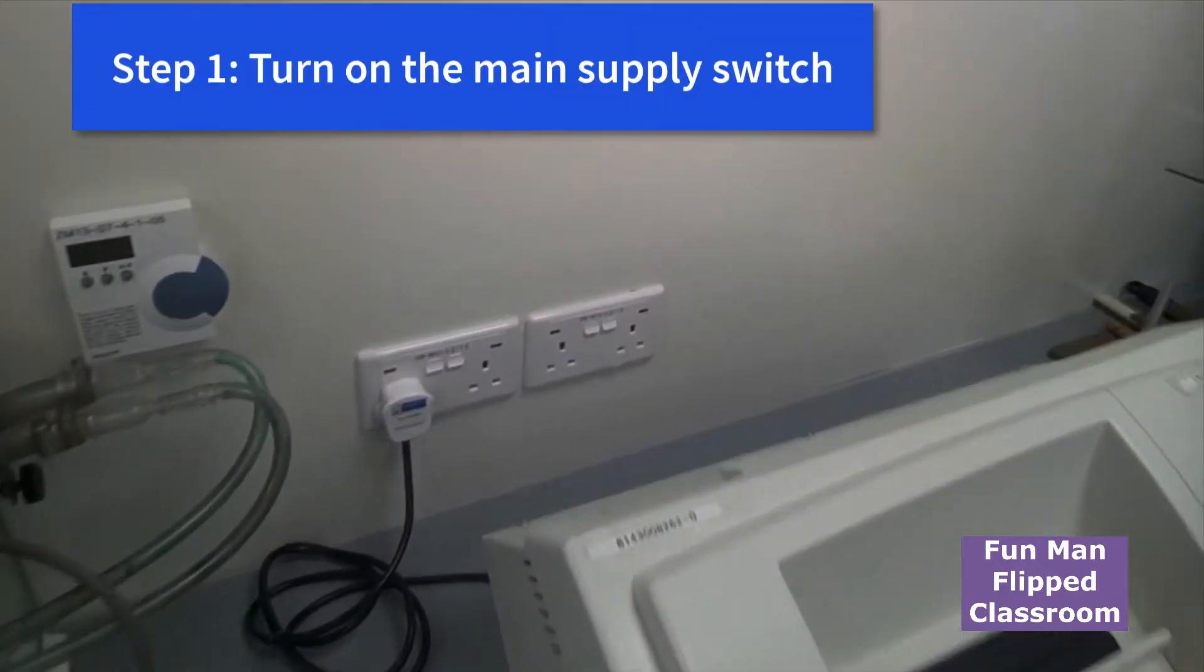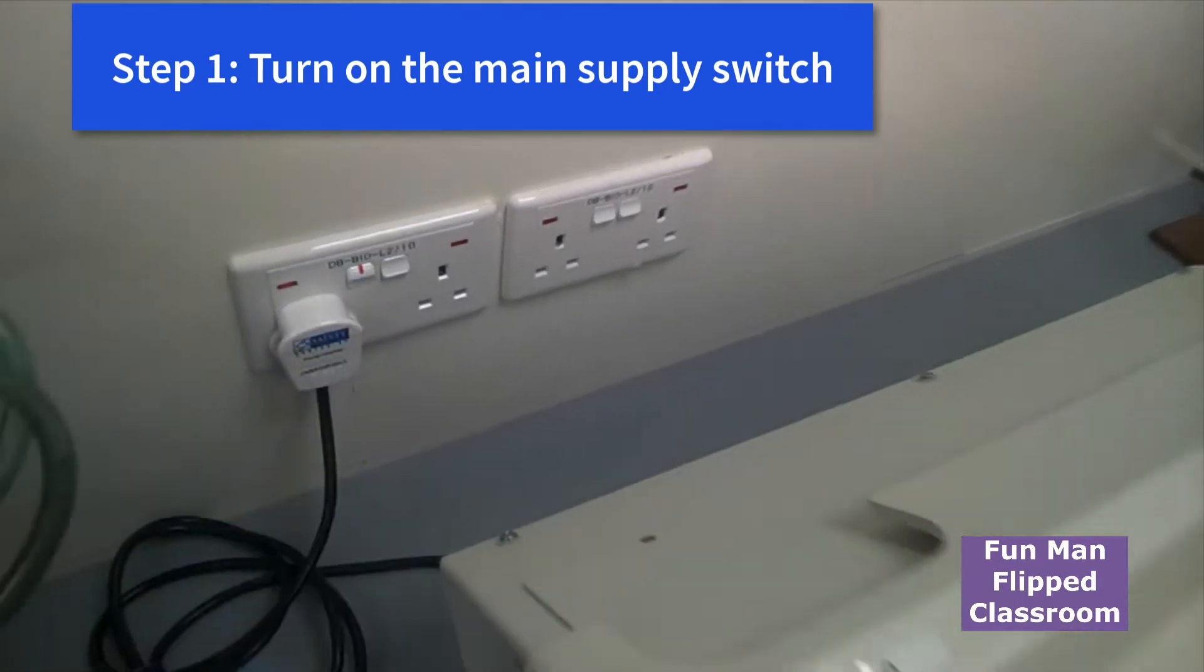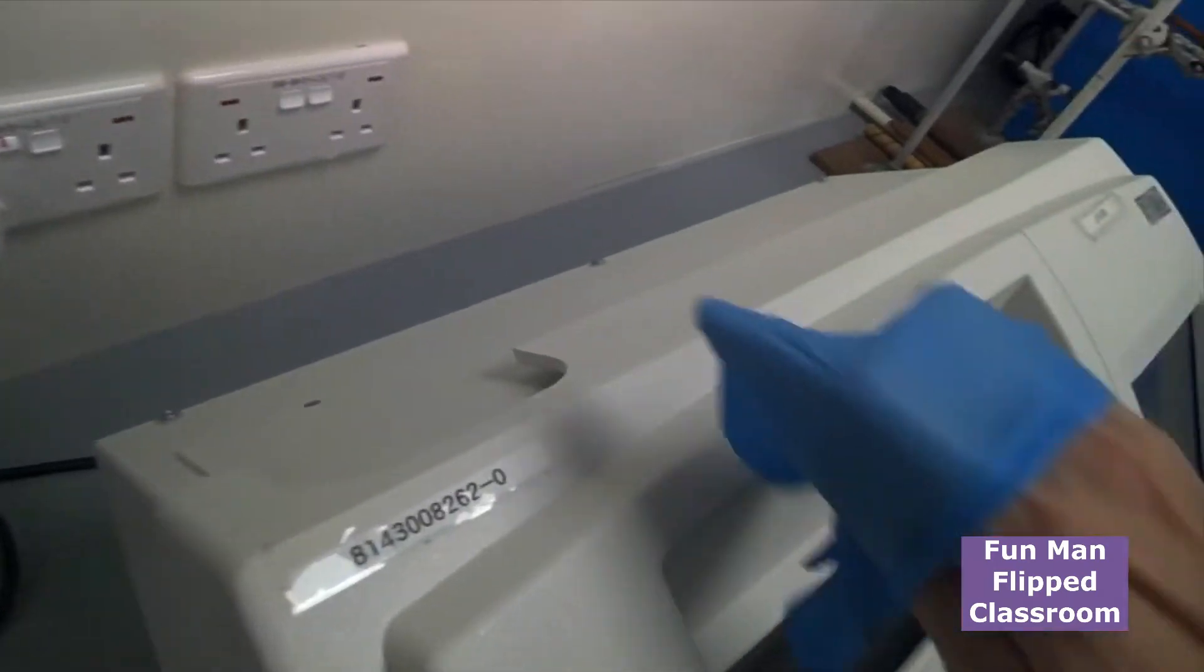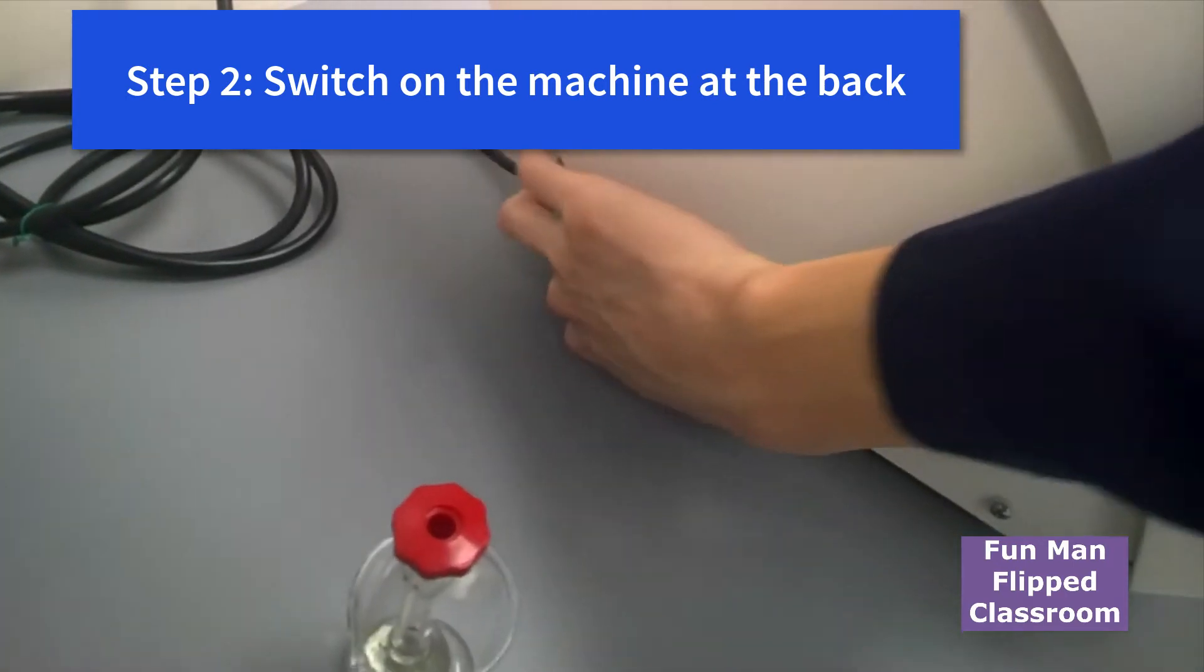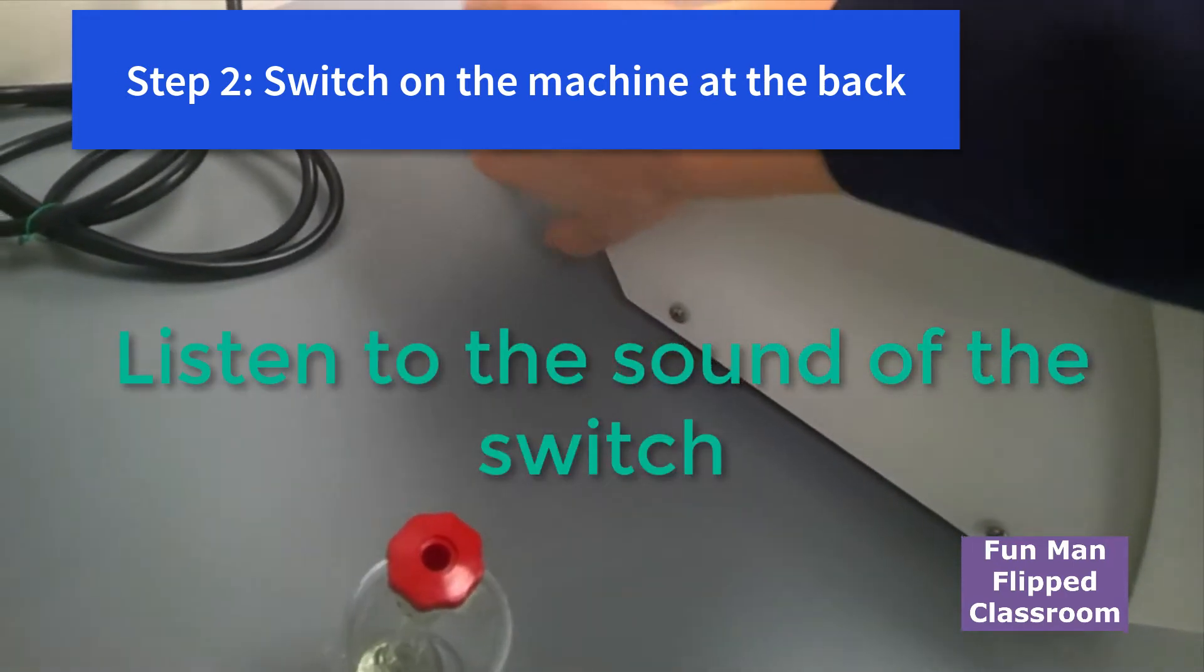Now the first thing you do is you turn on the main supply switch. The main switch for this apparatus is at the back. See, through the wire at the back, I would not turn it because I would like it to be stable. But at the back, you've got to flip it and switch it on.